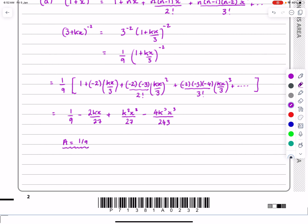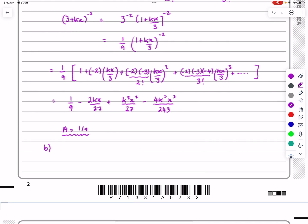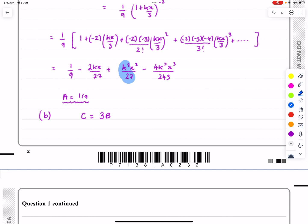Part B says C is equal to 3B. Can we work out what k is? Well, if C is equal to 3B, C is that bit there, k squared over 27 is equal to three lots of minus two over 27. So in other words,